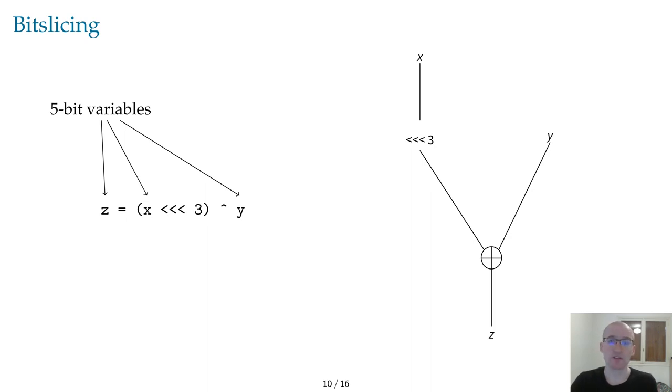In the bit-probing model, TightProof works only on Boolean circuits. To show what this implies, let's consider the example of a circuit that computes a left rotation on a 5-bit variable X and XORs the result with a 5-bit variable Y. So I am using 5-bit variables for simplicity, but of course a real-world cipher would rather use 32 or 64-bit variables.